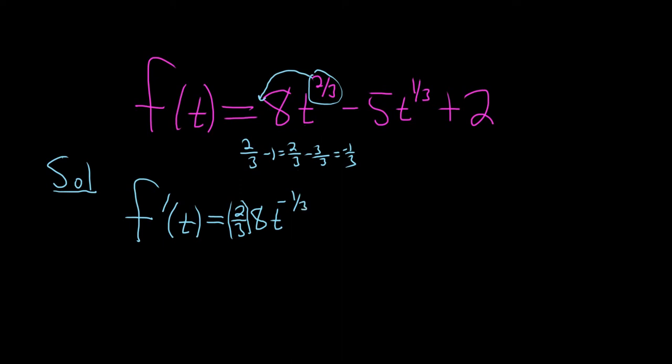So again the power rule says you just take this number and put it in the front and then you just subtract 1 and that gives you negative 1 third. Same thing here we'll get 1 third times 5 so minus 5 thirds.